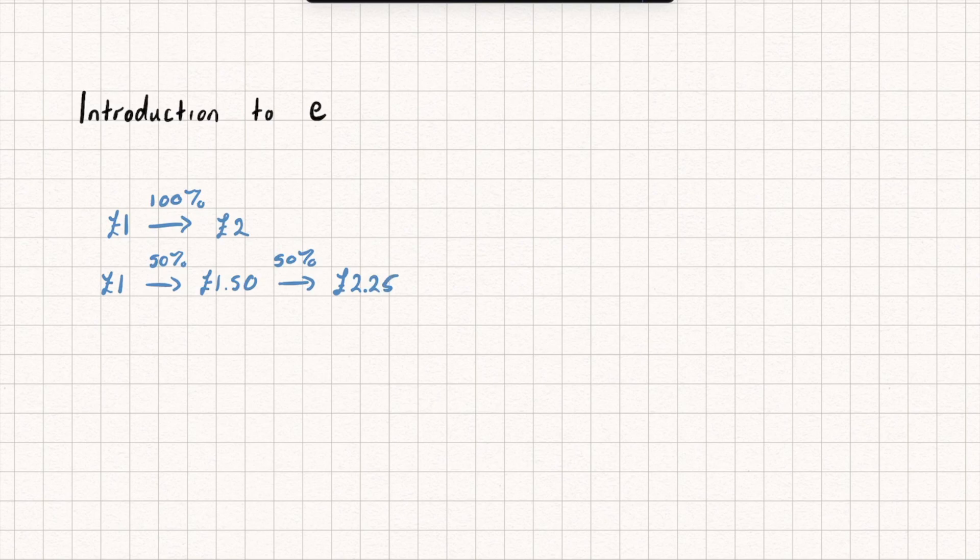And so you can see I've actually got more money by taking a lesser interest rate but receiving it more often. Now I'm going to kind of continue this but to make it a bit easier I'm going to see if I can come up with a formula to help me calculate these things.